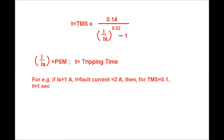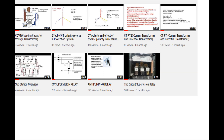Here, I is the actual measured current, IS is the reference or setting current, and T is the tripping time. For example, if IS (relay setting current) is 1 ampere and fault current I is 2 amperes — both I and IS referred to the secondary side of the CT — then for a TMS of 0.1, the tripping time will be 1 second. The higher the fault current, the lower the tripping time.